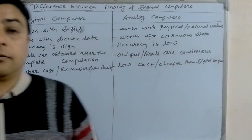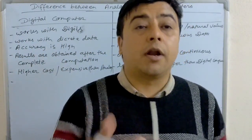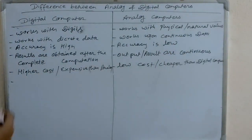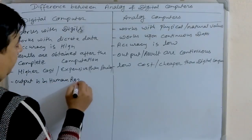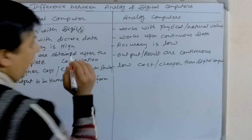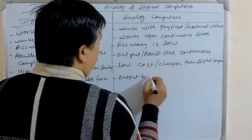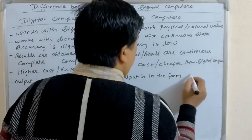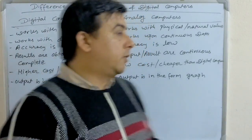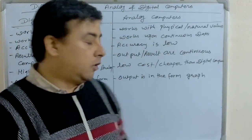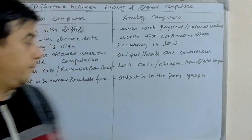The next point is, the output obtained in a digital computer is in human readable form, so that everyone can understand the output. In analog computers, the output is in the form of a graph, so not everyone can understand the result.